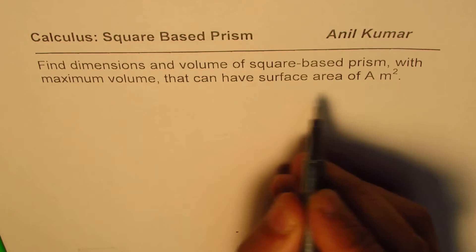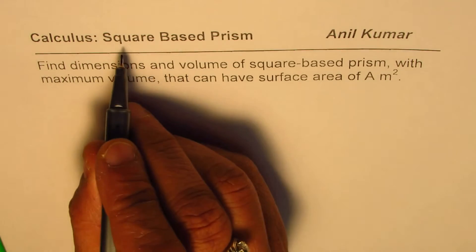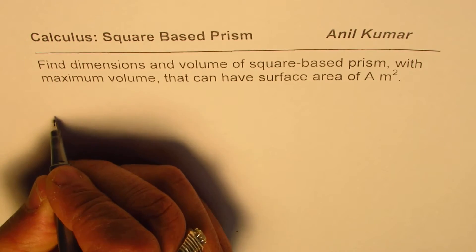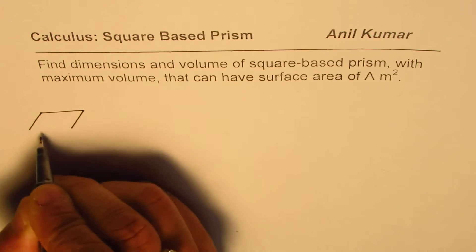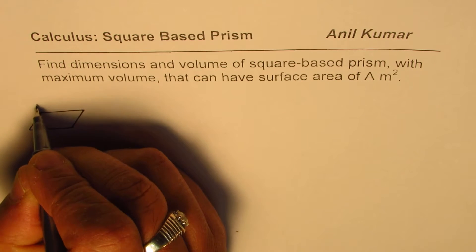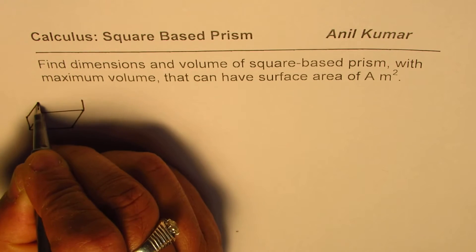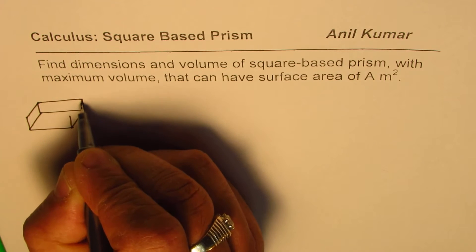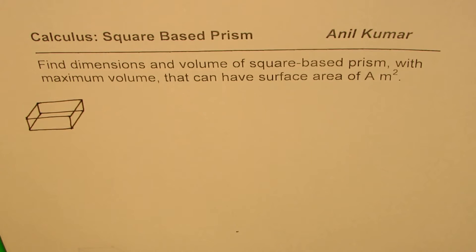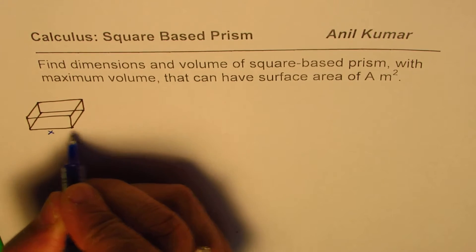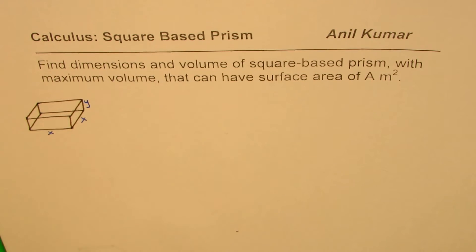Let's understand how to derive a formula and then apply it in some applications. Let me first sketch a square-based prism. The base is square. We have this square base, with y as the height and x as the length and width of the base. So in this prism, we have an x by x square base and y as the height.